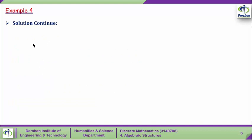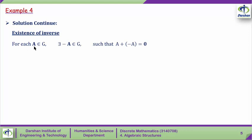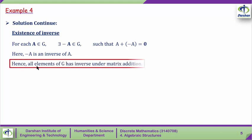The fourth property is the existence of an inverse for each element of G. For any matrix, if we add it to its negative matrix, we get the zero matrix, which is the identity element. So for each A from G, there exists -A from G such that A + (-A) equals the zero matrix. Hence -A is an inverse of A, meaning we negate all entries of the matrix. Therefore all elements of G have an inverse under matrix addition.